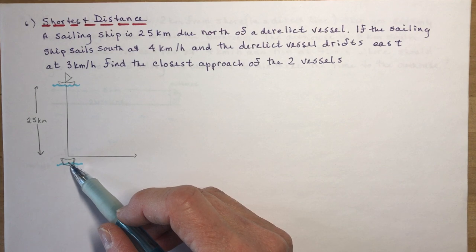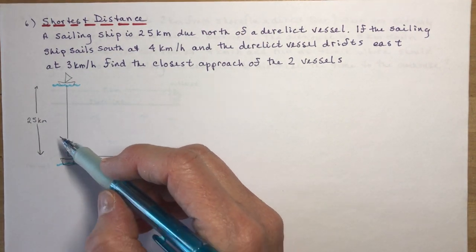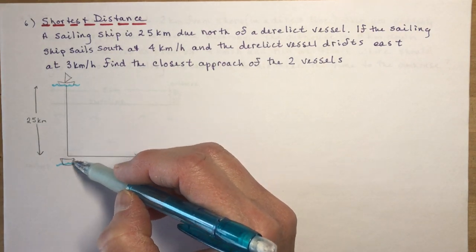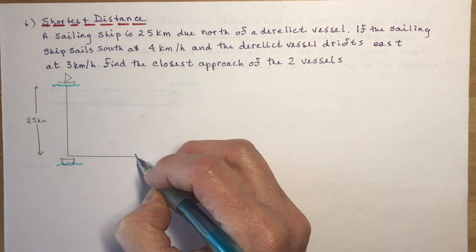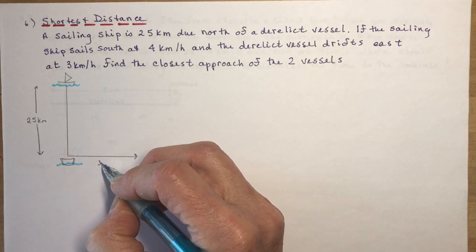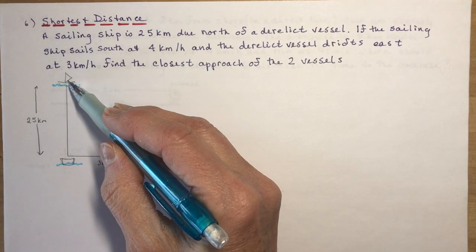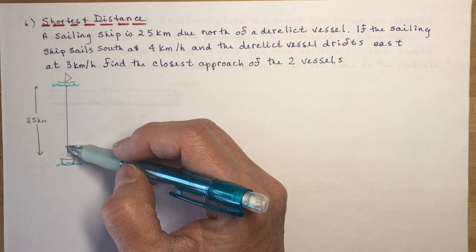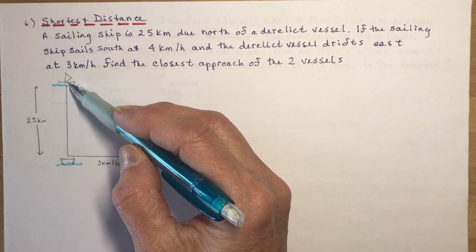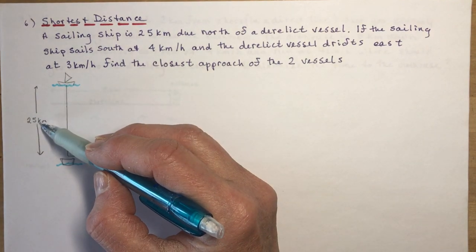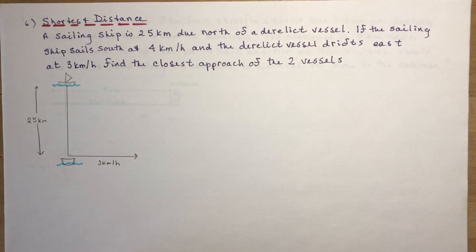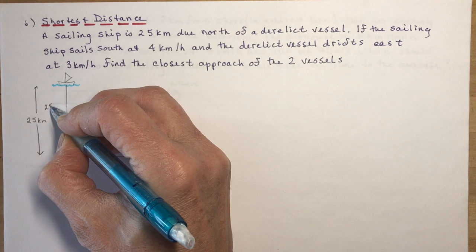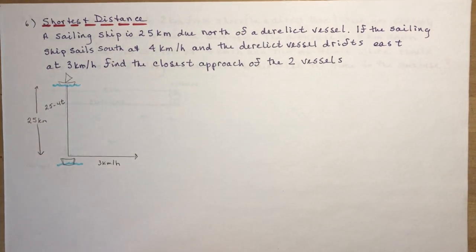So we have the derelict vessel here and the sailing ship — it's 25 kilometers north of it. This ship is sailing south and this one is going east at three kilometers per hour. The sailing ship is moving south at four kilometers per hour, so after one hour it's at 21, after two hours at 17, after three hours at 13 — subtracting four every time. So this distance becomes 25 minus 4t, where t is the number of hours that have passed.